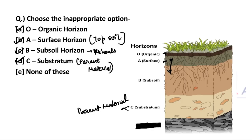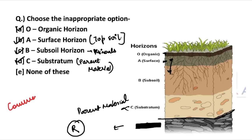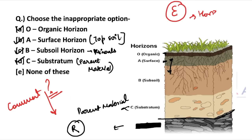There is one more horizon represented by the letter R. Tell me in the comment section what exactly R represents. Apart from this, there is also the E horizon. So tell me in the comment section what both R and E in the soil horizon represent.